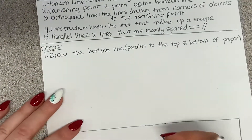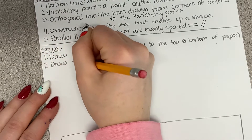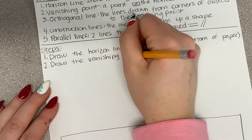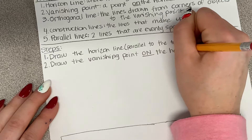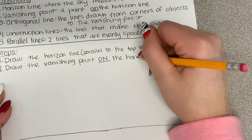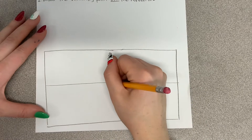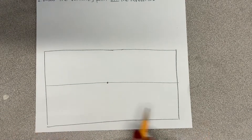Step two is to draw the vanishing point on the horizon line. Here's my horizon line — in the middle of that, put the vanishing point. It needs to be in the middle for our case, though normally you could put it anywhere on the horizon line. For our practice, we want it in the middle so your result ends up matching mine.